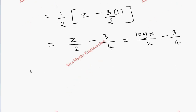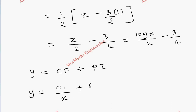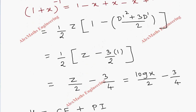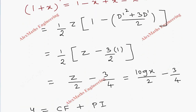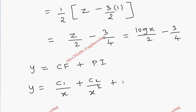Now writing the complete solution y equals CF plus PI: y equals C1/x plus C2/x squared plus log x over 2 minus 3/4. So we have obtained the general solution.